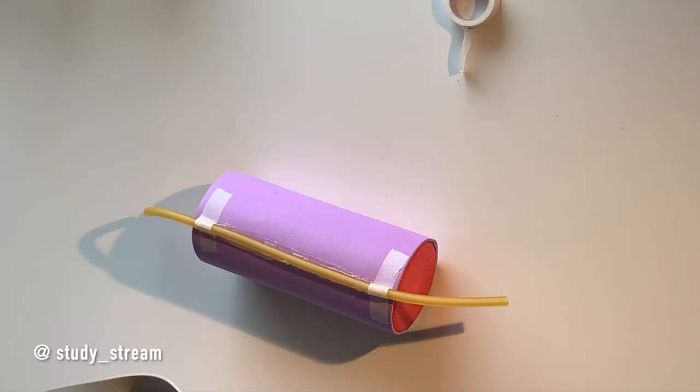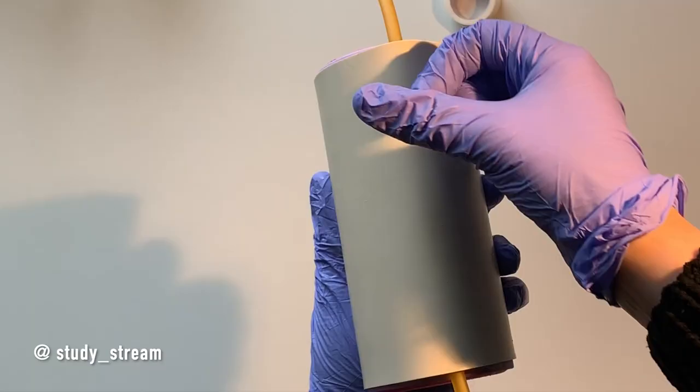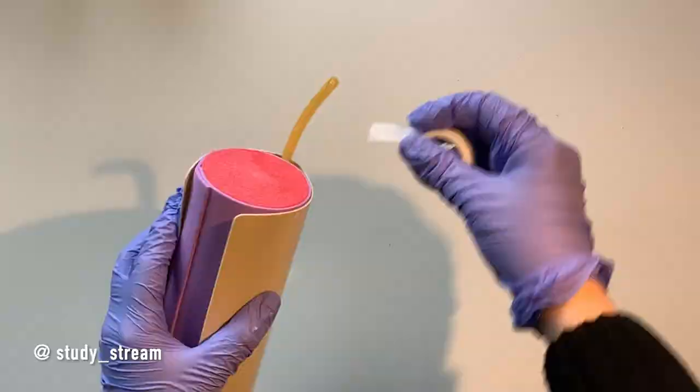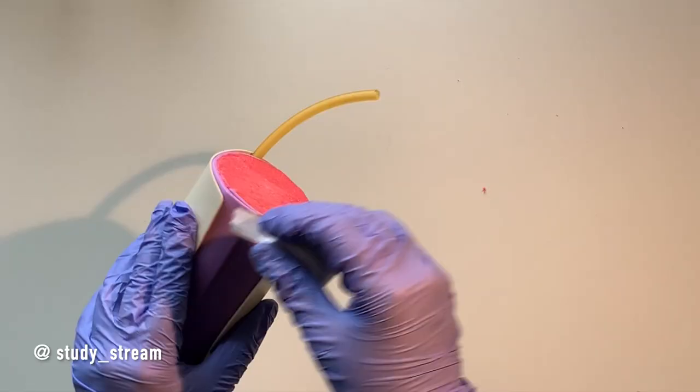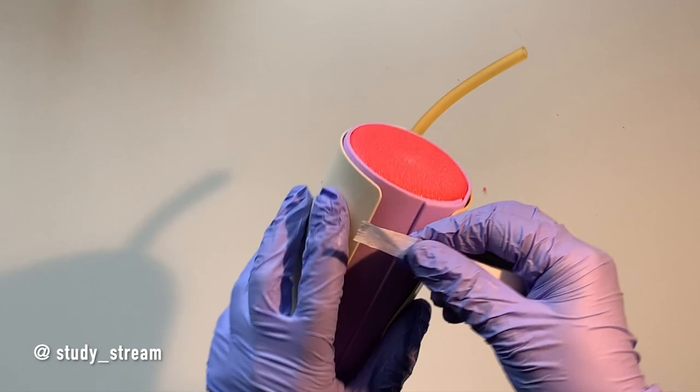Once the glue has dried, attach the fake skin by paper tape on both ends and the middle of the base. I have experimented with using glue and double-sided tape to attach the skin but they don't work as well as paper tape.